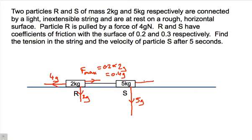For particle S, I can do the same thing. It's F_max. It's going to be equal to the coefficient of friction, which is 0.3, multiplied by the force or the reaction force, which is the same as the force pushing down to the surface of 5G. So that gives me 1.5G of friction on particle S.